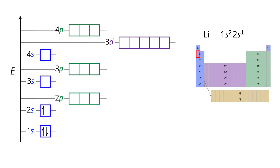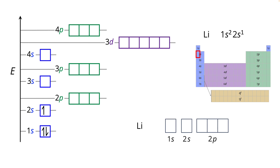Now that orbital is filled, so the third electron goes into the 2s orbital — that's it for lithium. We write the orbital diagram horizontally in terms of increasing energy from left to right: 1s, then 2s, then the 2p subshell with three orbitals within it. We fill in the electrons showing their spin states, and that is the orbital diagram for lithium.